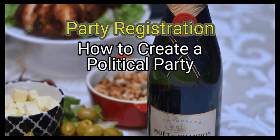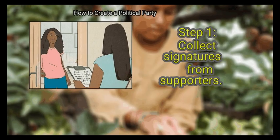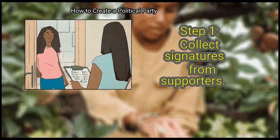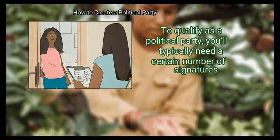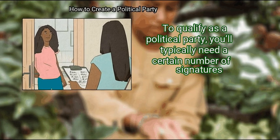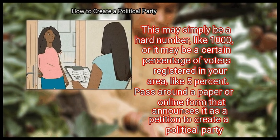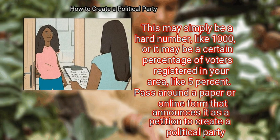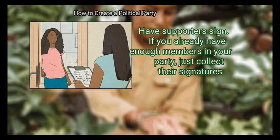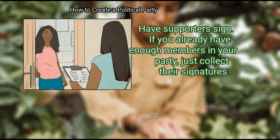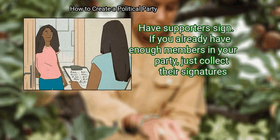Method 3: Party registration. First, collect signatures from supporters. To qualify as a political party, you'll typically need a certain number of signatures. This may simply be a hard number, like 1,000, or it may be a certain percentage of voters registered in your area, like 5%. Pass around a paper or online form that announces it as a petition to create a political party and have supporters sign. If you already have enough members in your party, just collect their signatures.